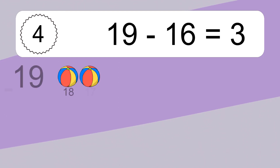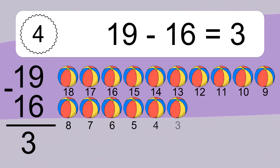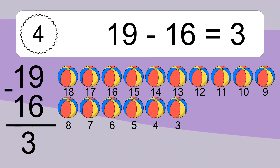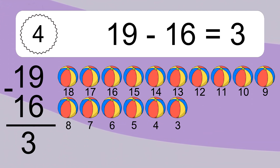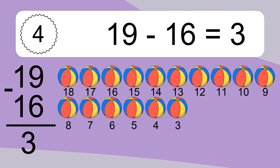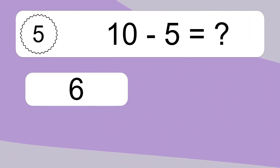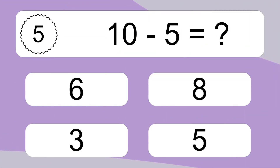Nineteen minus sixteen equals what? Nineteen minus sixteen equals three. Let's count it: eighteen, seventeen, sixteen. Ten minus five equals what?